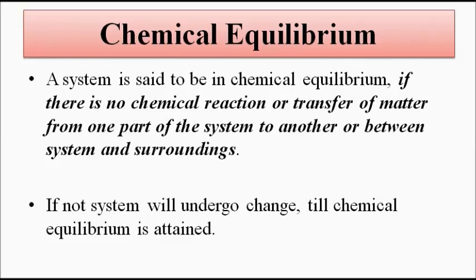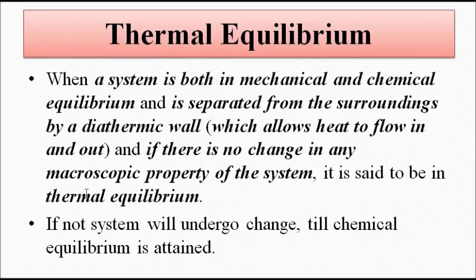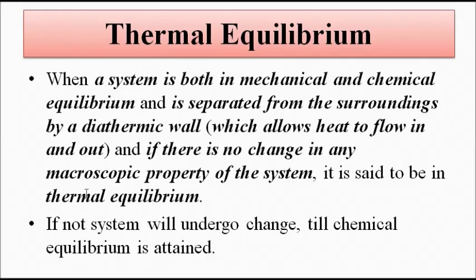Thermal equilibrium: suppose a system is in both mechanical and chemical equilibrium and is separated from the surroundings by a diathermic wall — a wall which allows heat to flow in and out of the system. If there is no change in any of the macroscopic properties of the system, such as pressure, volume, and temperature, then the system is said to be in thermal equilibrium.